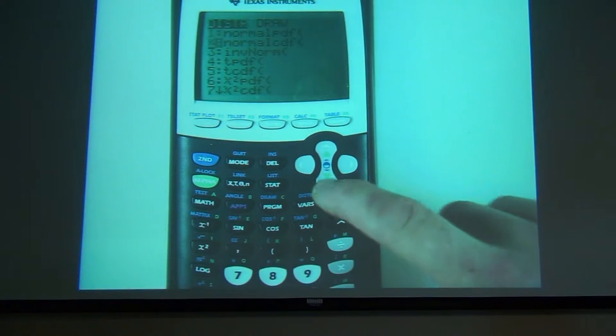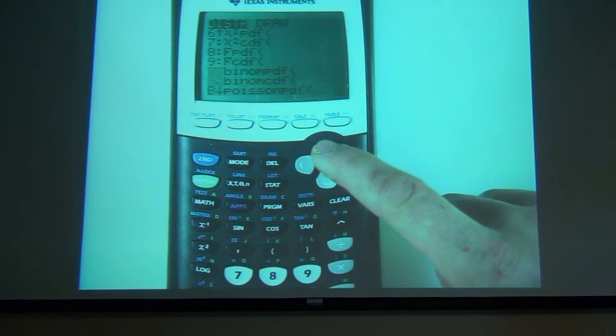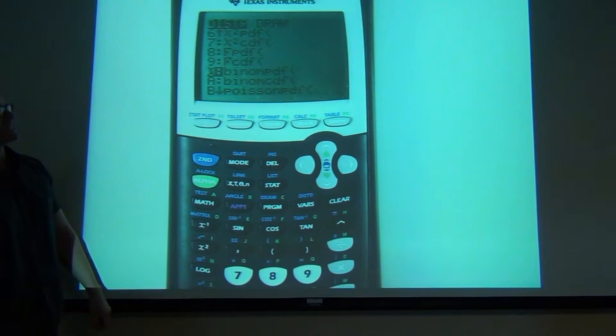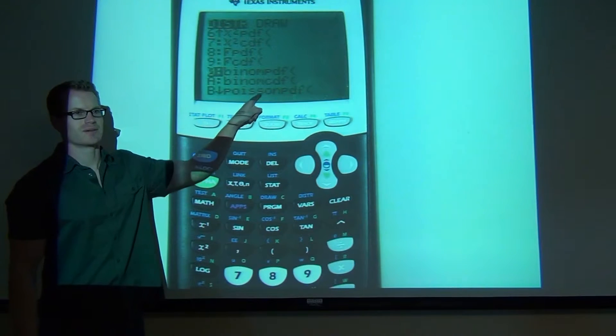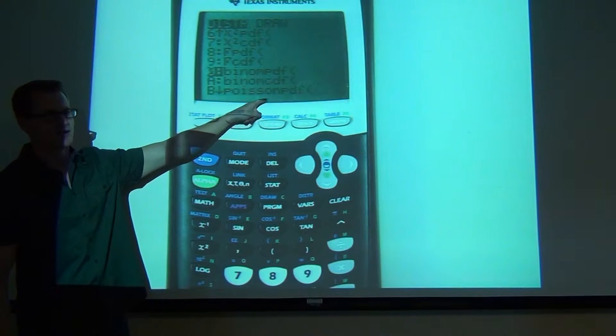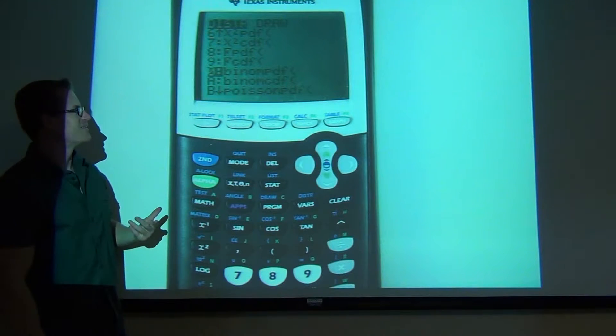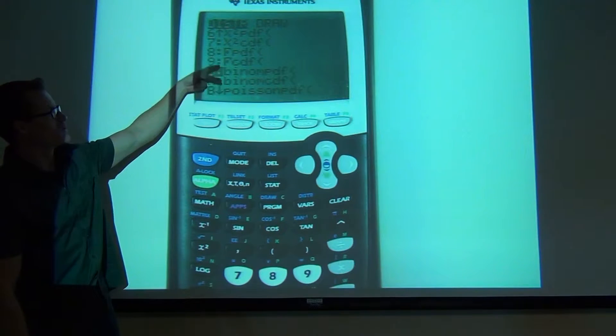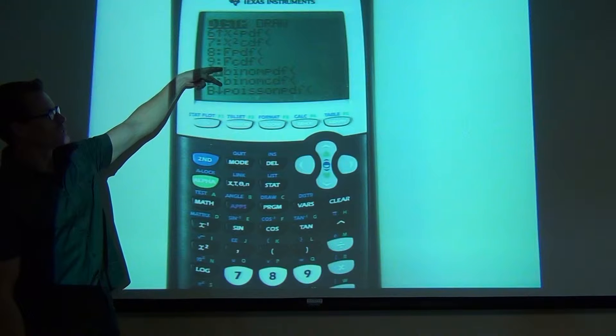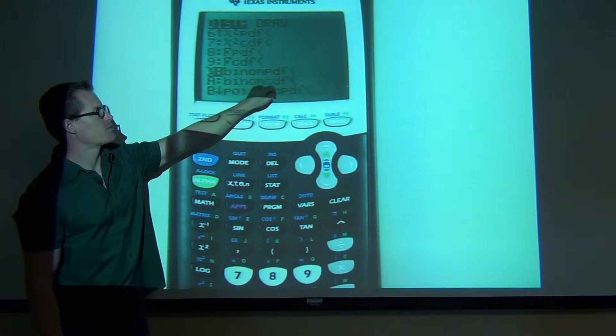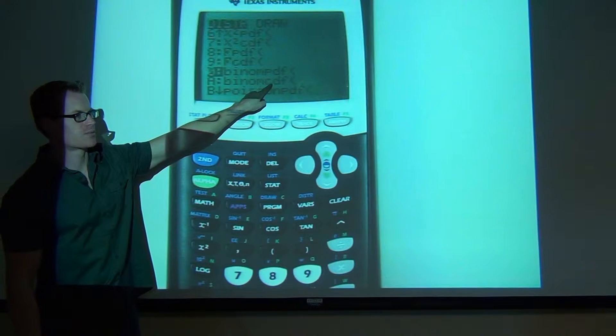Scroll down a little bit. You're going to see numbers 10 and 8. Those say binomial PDF and binomial CDF. Don't go into the Poisson. We don't want Poisson. You'll get sick. We're just going to go here. If you go to Poisson, you've gone too far.